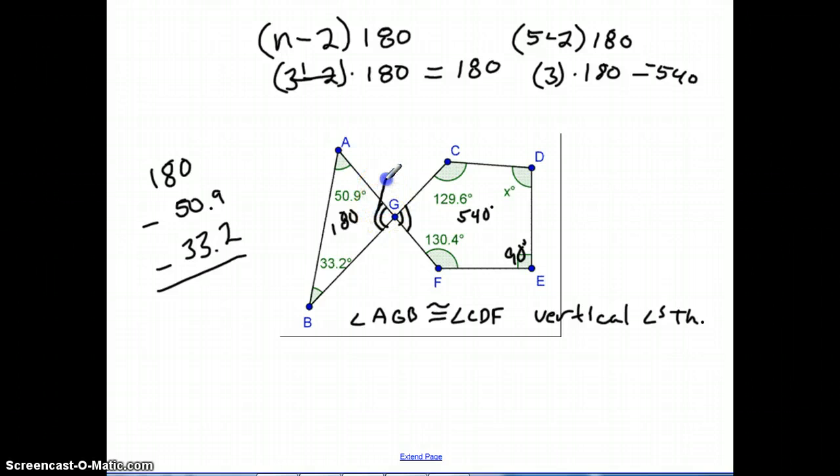So that's this angle here. That means that this angle is also 95.9. So now I can take the four angles that I know in this pentagon and just subtract those from 540 to figure out what X is equal to.